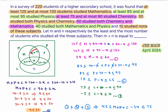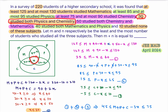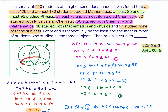Since I've taken the all-three region as x, the Math-and-Physics-only overlap becomes 40 minus x. Adding them: (40 − x) + x = 40, confirming 40 students study both Math and Physics. Similarly, 30 students study both Physics and Chemistry, so that region becomes 30 minus x. They've also given that 50 students study both Chemistry and Mathematics, so that part is 50 minus x.